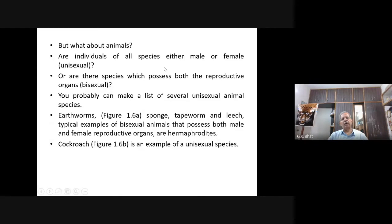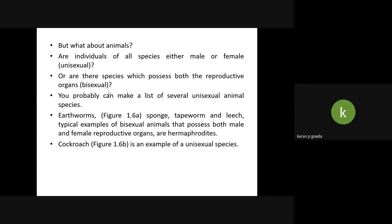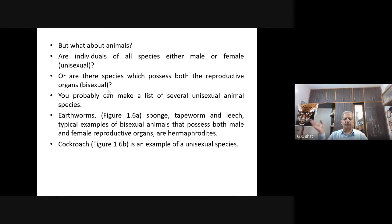What about animals? Are individuals of all species either male or female (unisexual), or are there species which possess both reproductive organs (bisexual)? In earthworm, it has both male and female — it is bisexual. Earthworm is bisexual. Cockroach is unisexual. Frog is unisexual. All vertebrates are unisexual. Right from Porifera, let us see whether they are unisexual or bisexual.